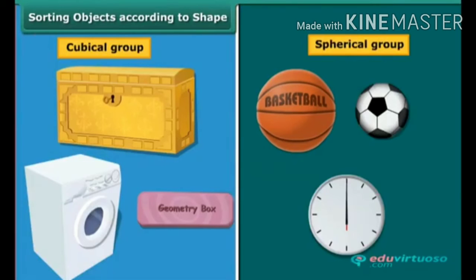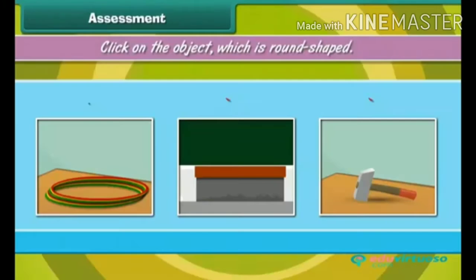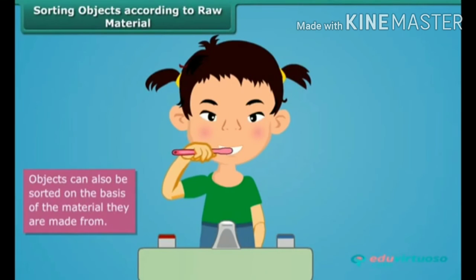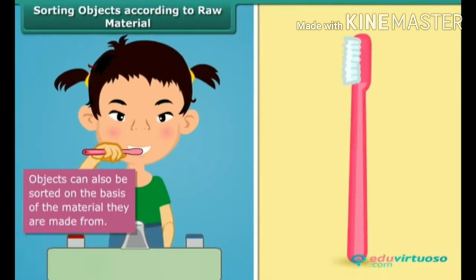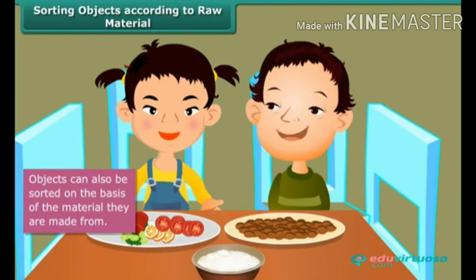The first object we use as soon as we wake up is the toothbrush. Have you ever wondered what it is made up of? It is made up of plastic. The plate you eat from is made of melamine or stainless steel. The cupboard in which you keep your clothes or books is made up of iron or wood. The book that you read is made up of paper. The shoes you wear are made up of leather, canvas, or resin. Thus, all the objects we use in our day-to-day life can be classified on the basis of the raw materials used in making them.